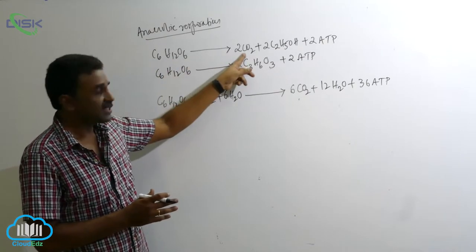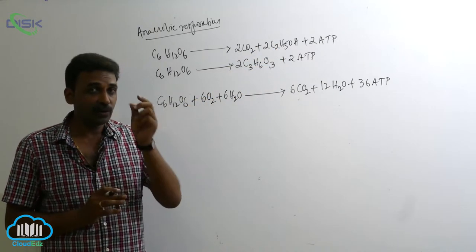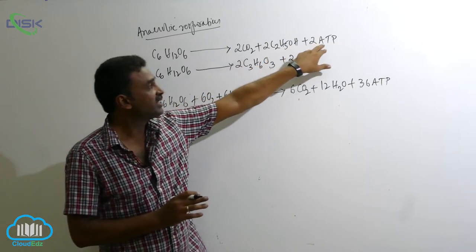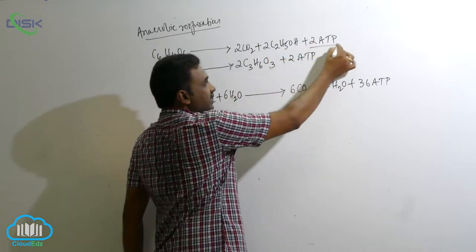In the process, carbon dioxide and ethanol are produced. Ethanol or ethyl alcohol is produced, and just two ATP molecules are synthesized.